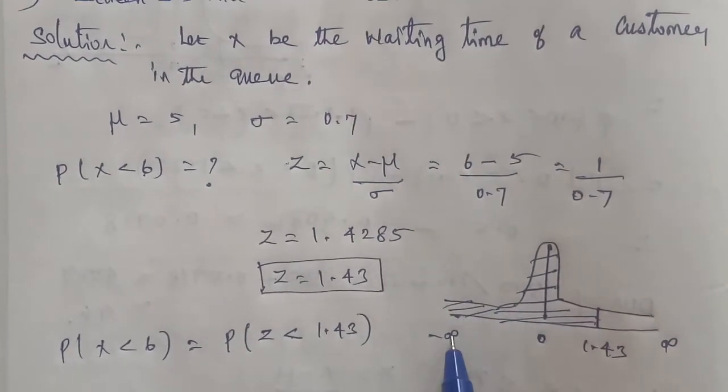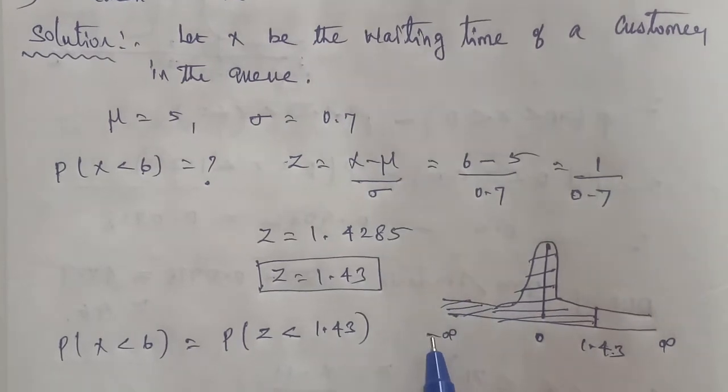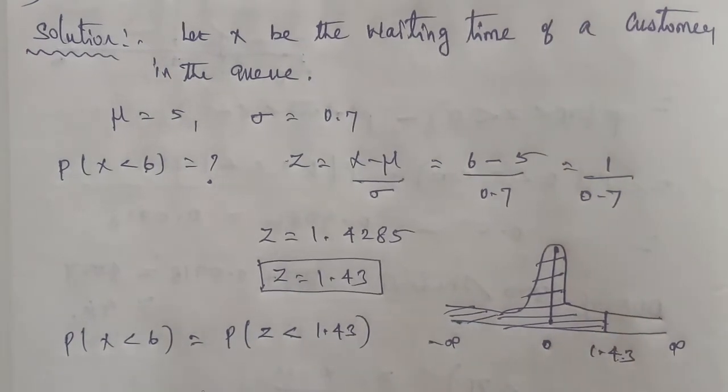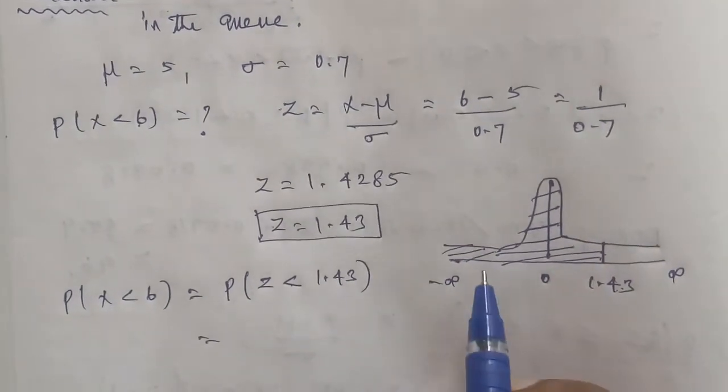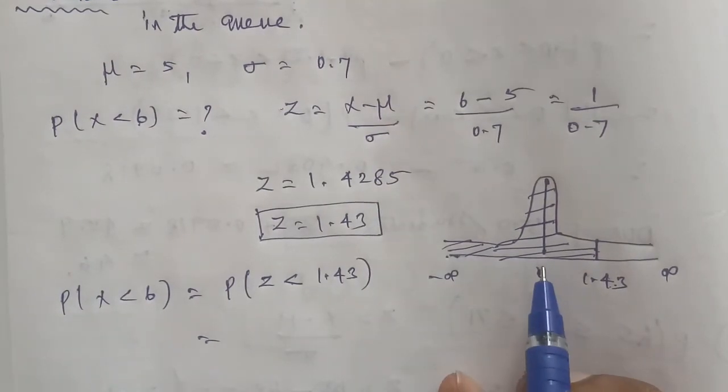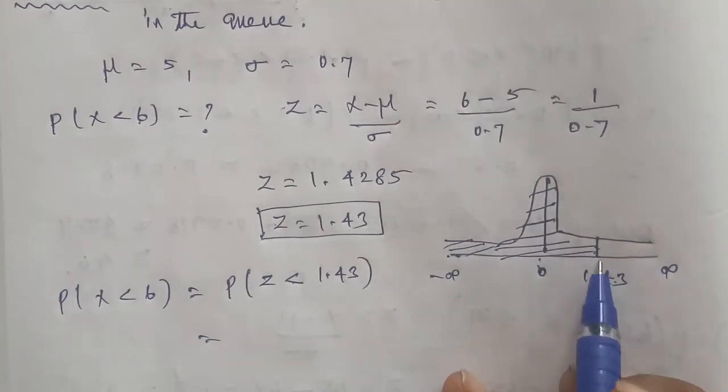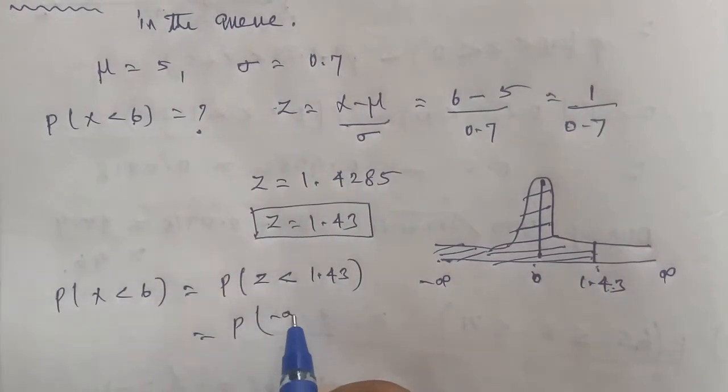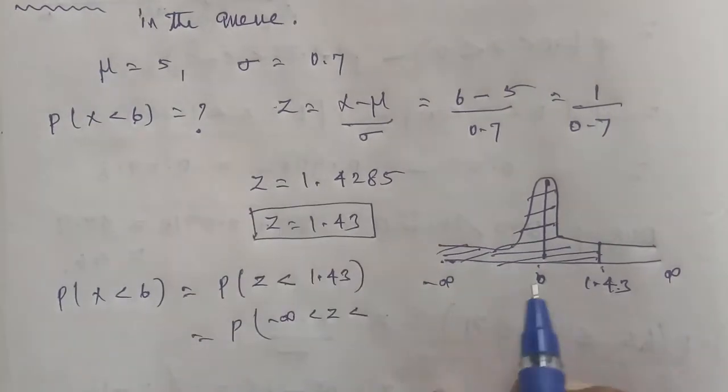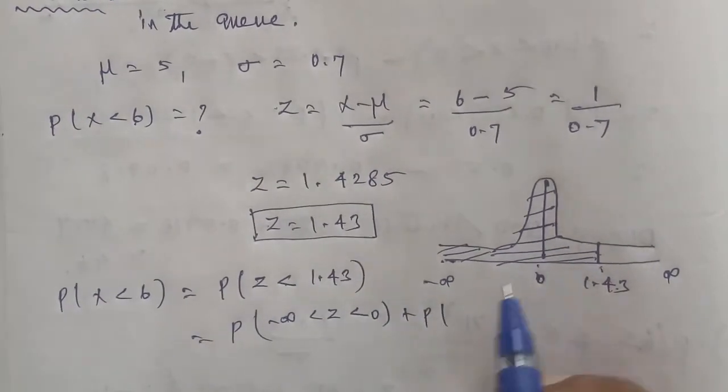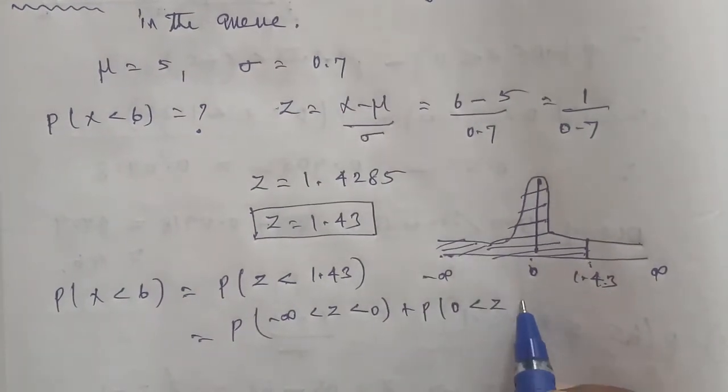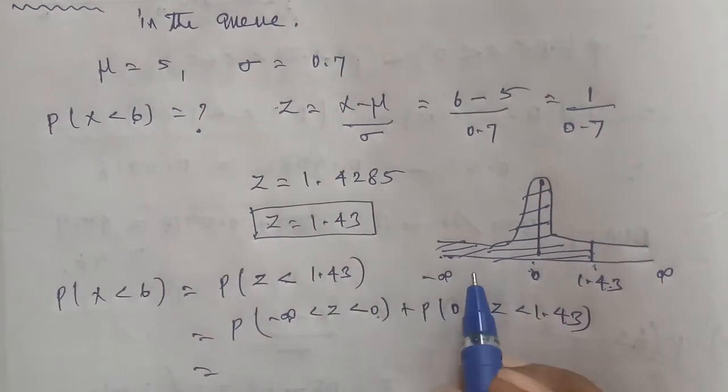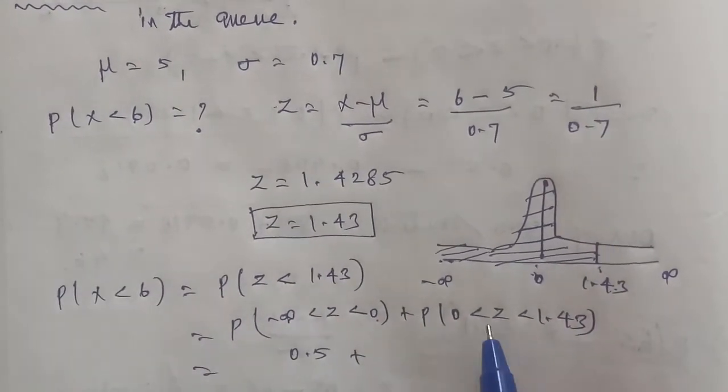The distribution goes from minus infinity to 1.43. The portion from minus infinity to zero, plus the portion from zero to 1.43, gives us the answer. Therefore, we need to calculate P(-∞ < Z < 0) plus P(0 < Z < 1.43).